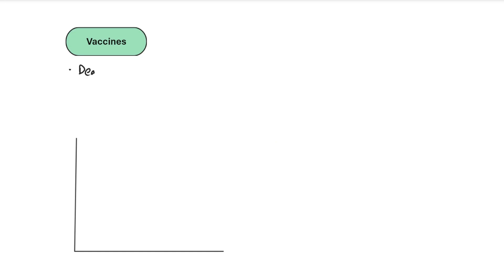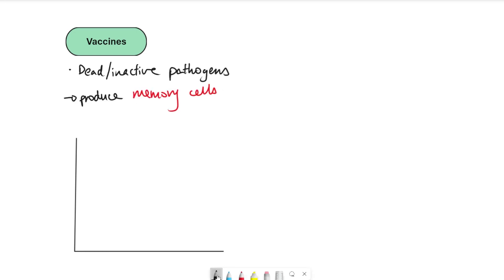Vaccines are dead or inactive pathogens that get injected into the body. They have to be dead or inactive because otherwise injecting pathogens would just trigger an immune response, which is what you get when you're sick. The vaccine is a safe way of injecting dead or inactive pathogens to make the immune system produce memory cells, which are able to recognize the same pathogen if it actually invades the body.